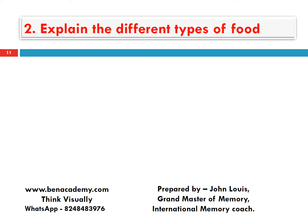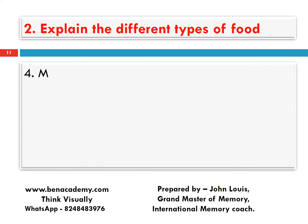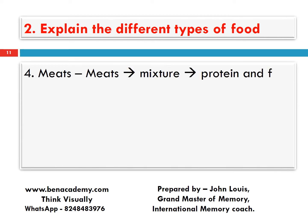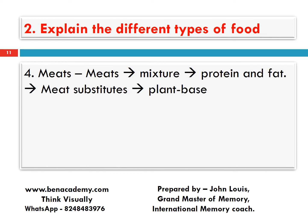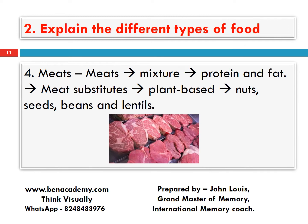How do you remember this paragraph? Meats are a mixture of protein and fat. Meat substitutes are plant-based — and the substitutes are nuts, seeds, beans, and lentils.